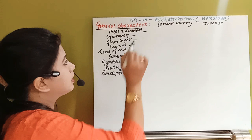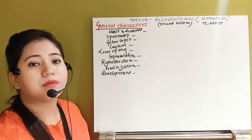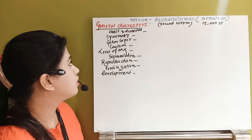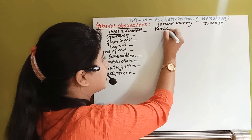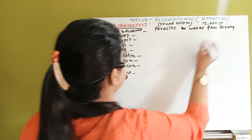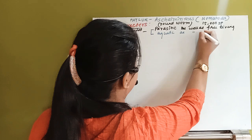Let us start with the general characters. Regarding habit and habitat: this organism can be both parasitic as well as free-living. It can also be aquatic as well as terrestrial.